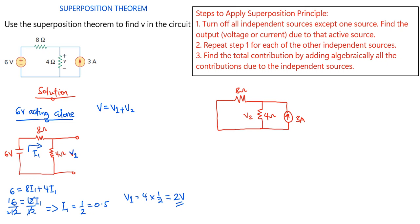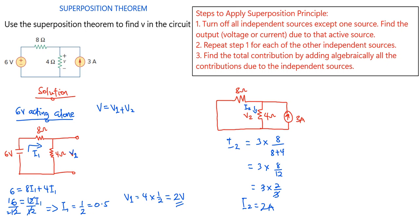Now we want to find V2. We can apply the current division rule. The current flowing through the 4 ohms, I2, equals 3 amperes multiplied by 8 over (8 plus 4), which is 3 times 8/12. Simplifying, 8/12 gives 2/3, so 3 times 2/3 — the 3s cancel — giving I2 equal to 2 amperes. Therefore V2 equals 2 amperes times 4 ohms, which gives 8 volts.